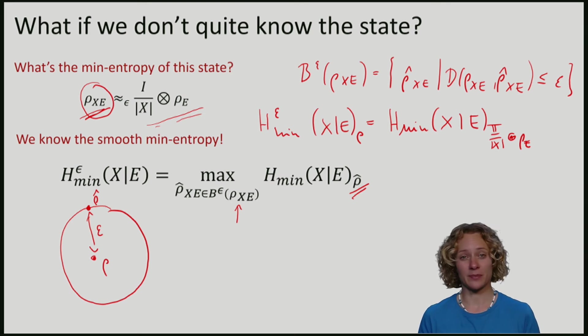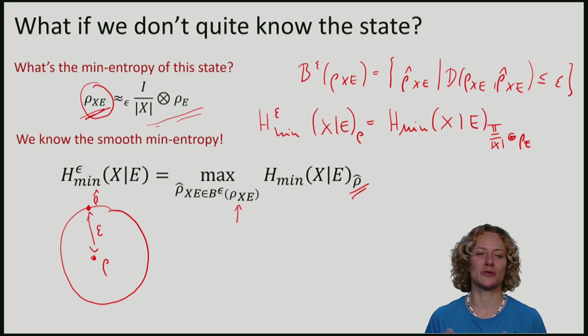This smoothing procedure is very convenient to compute the entropy if we don't know exactly what the state is. It also has some nice properties. It allows us to ignore bad cases that happen with small probability. But another reason why people like the smoothing is that mathematically, this smooth min-entropy often behaves much nicer than the normal min-entropy if we wanted to prove something.